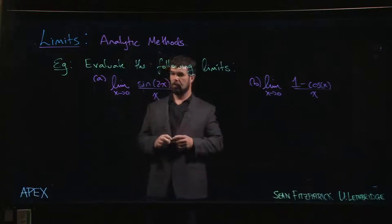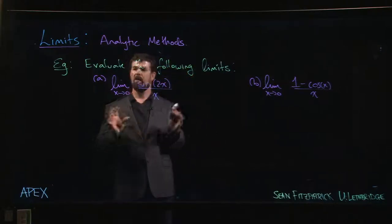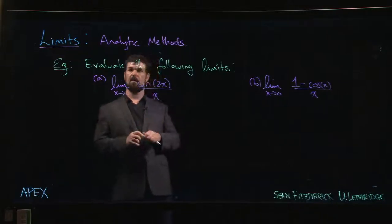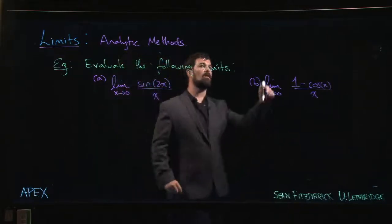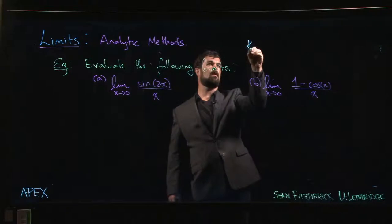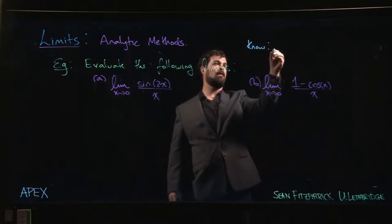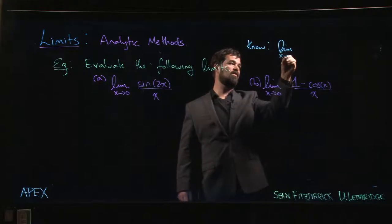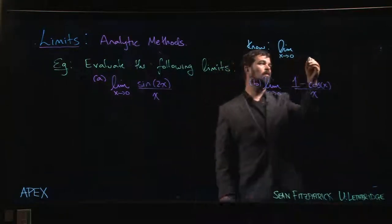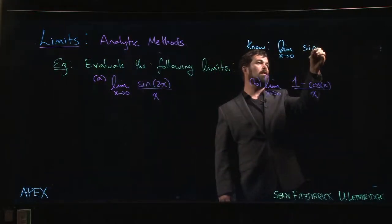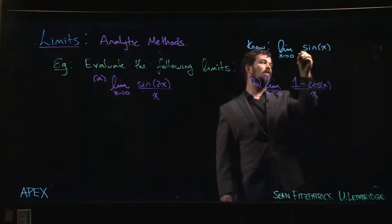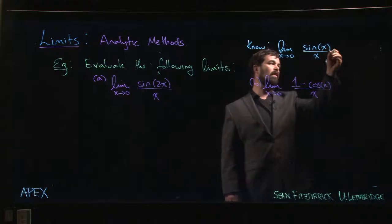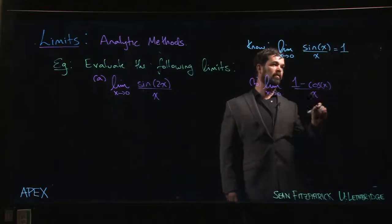Before we finish with section 1.3, we're going to look at a couple of limits involving trig functions. The idea here is we want to make use of this limit that we've established. This is a key limit for a lot of problems that we will encounter. This limit as x approaches 0, sin x over x is equal to 1.